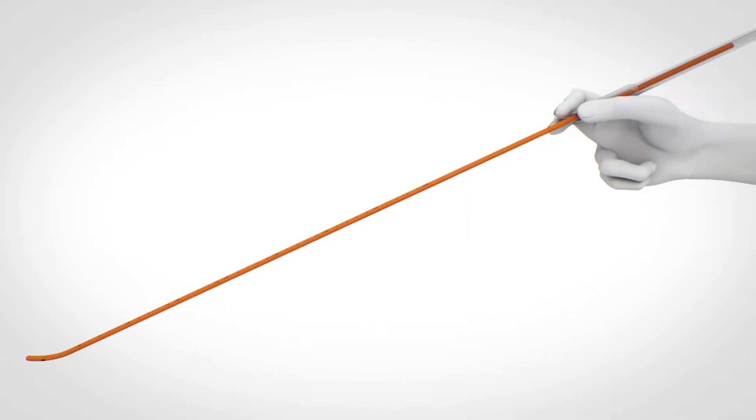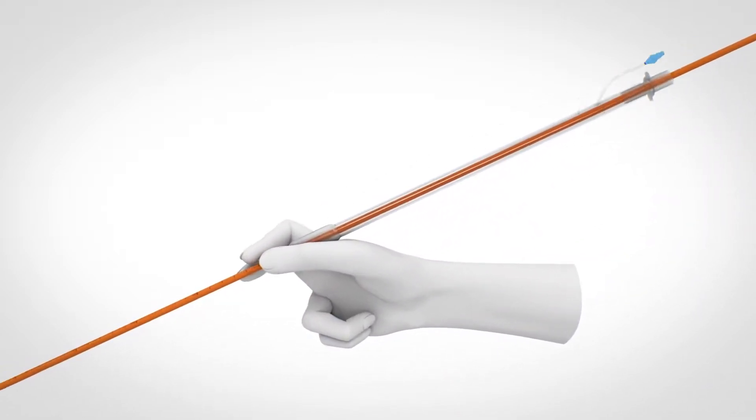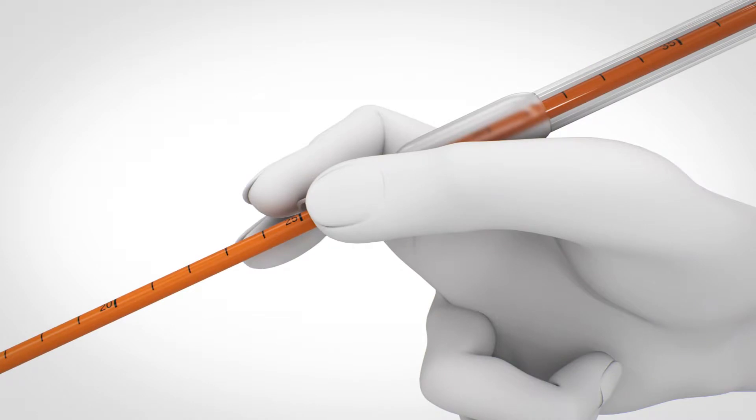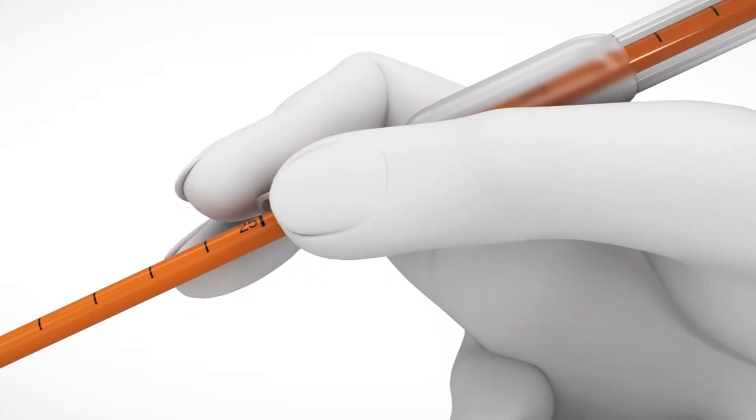Preload the tracheal tube over the EyeBougie and hold the EyeBougie together with the tip of the tube at the 25-centimeter marking.